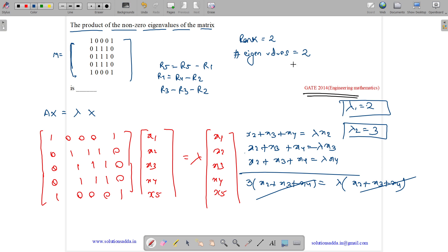So there are two eigenvalues and they are 2 and 3. So the product of these eigenvalues are 2 into 3 which is 6. So the answer to this question is 6.